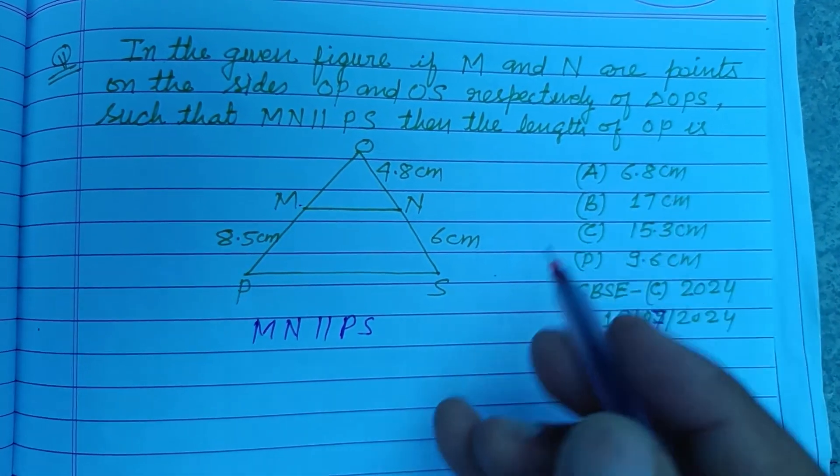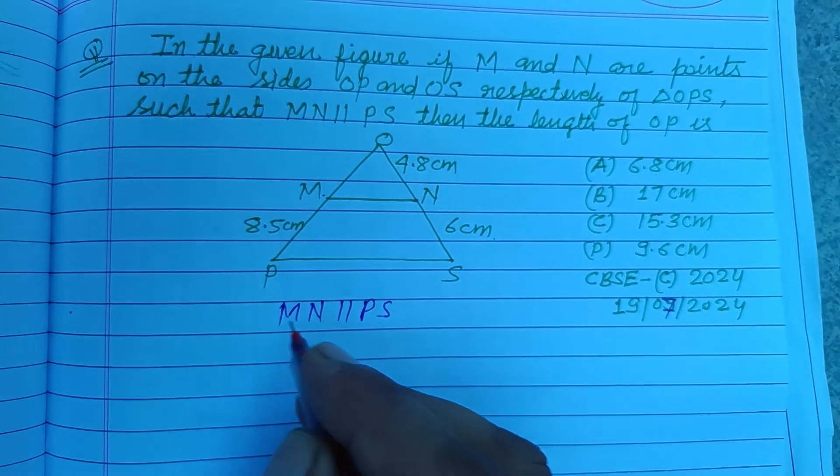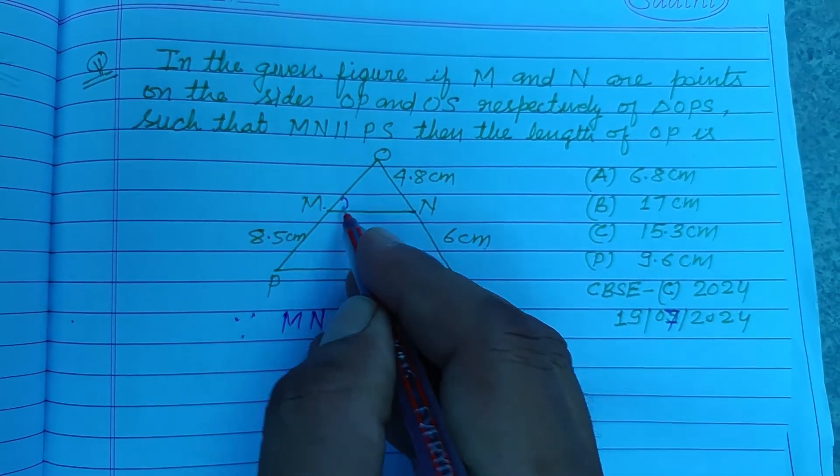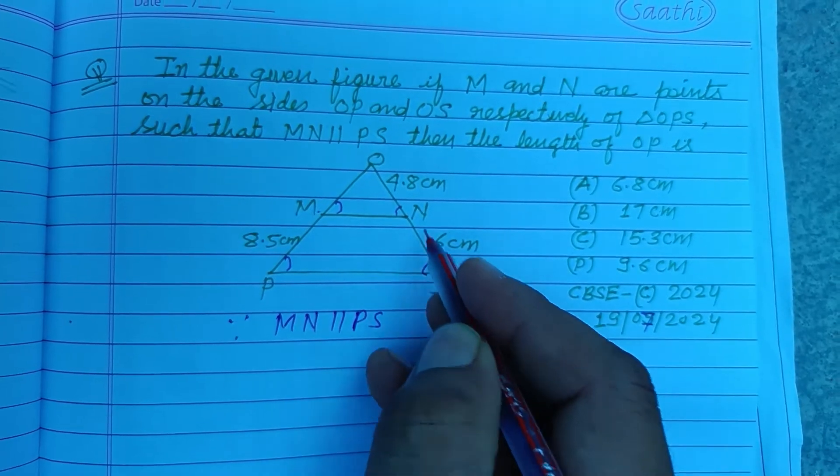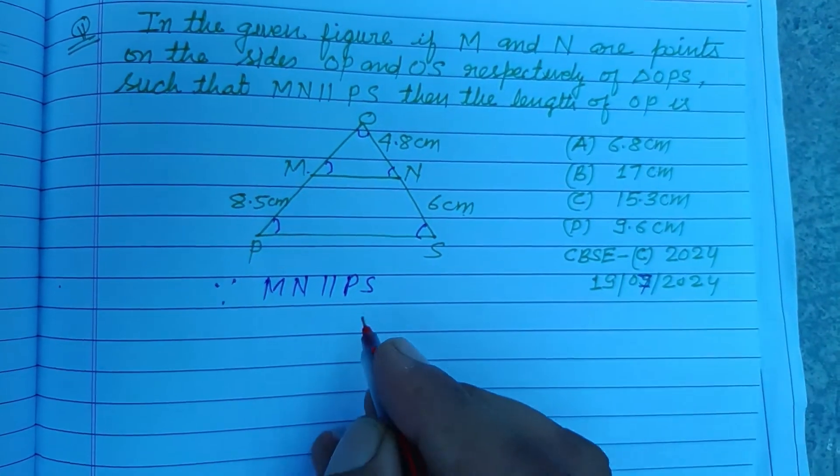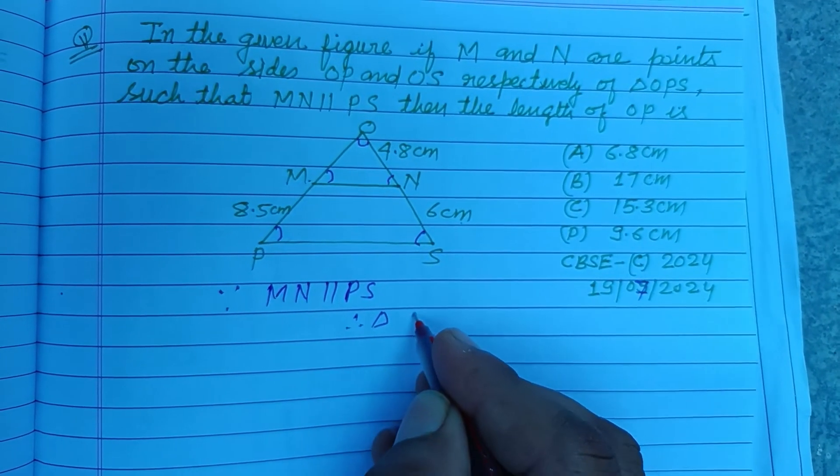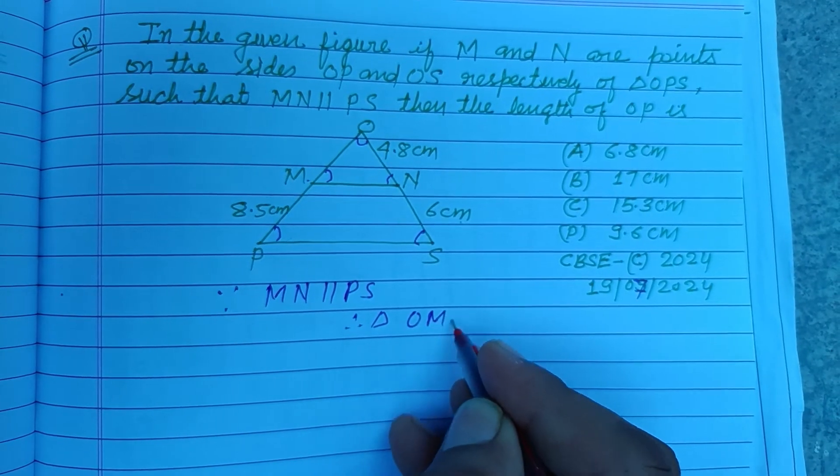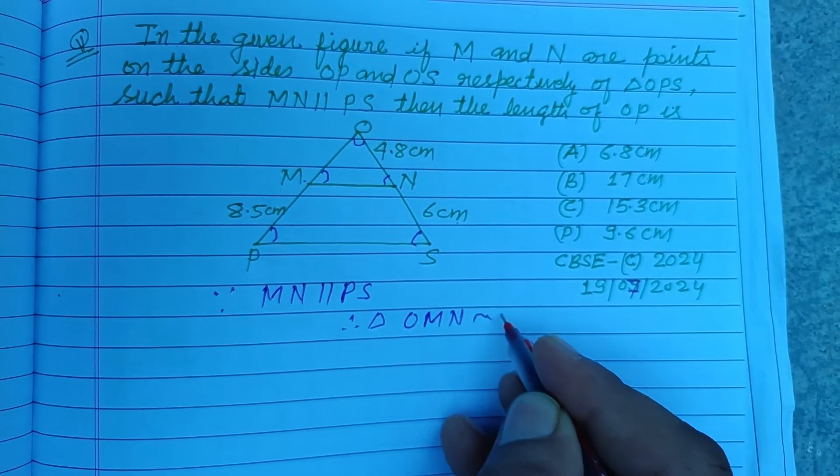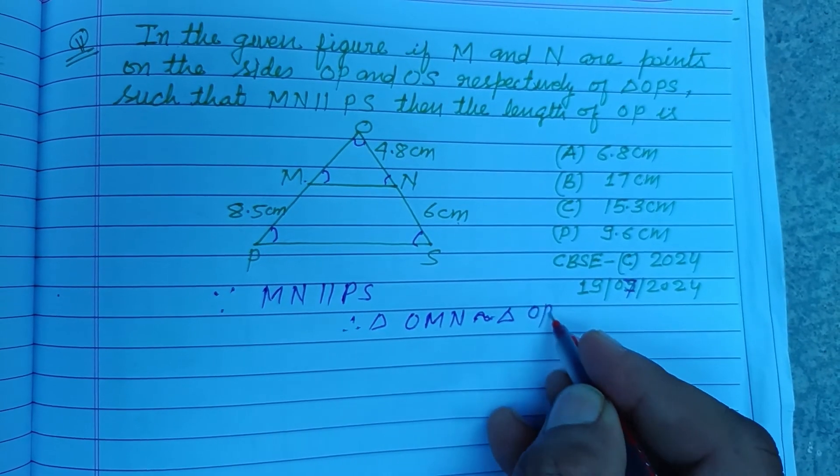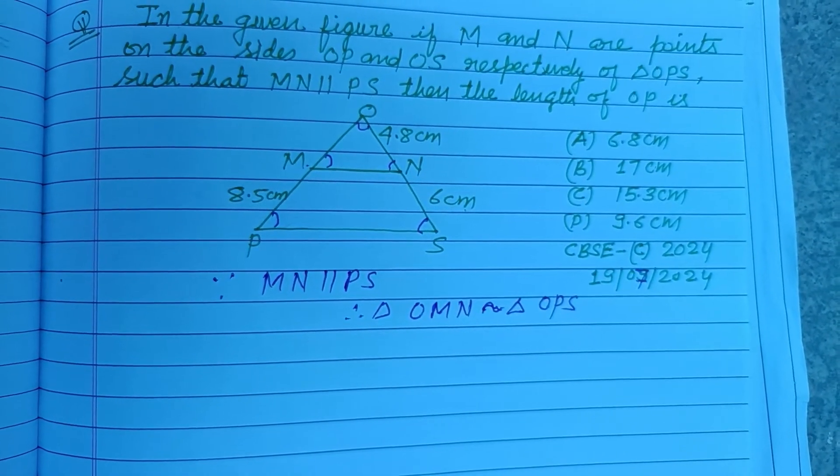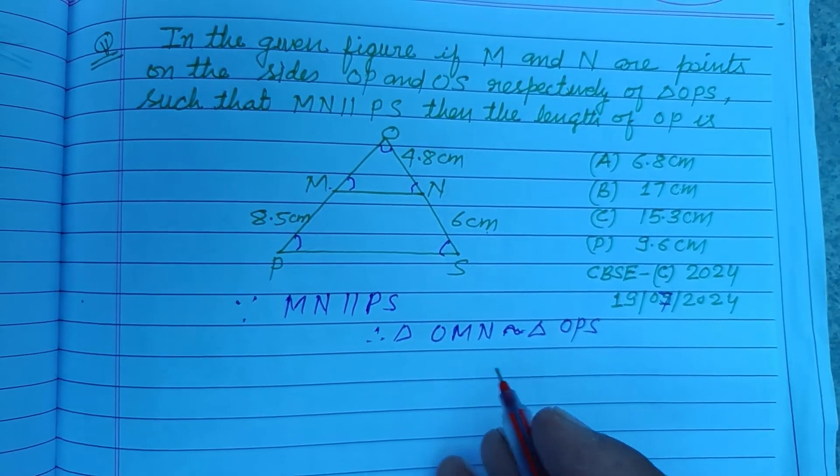Since MN parallel to PS, then this angle equals this, and this angle equals this. These are corresponding angles, and this angle is the same. Therefore, triangle OMN is similar to triangle OPS by AAA similarity.